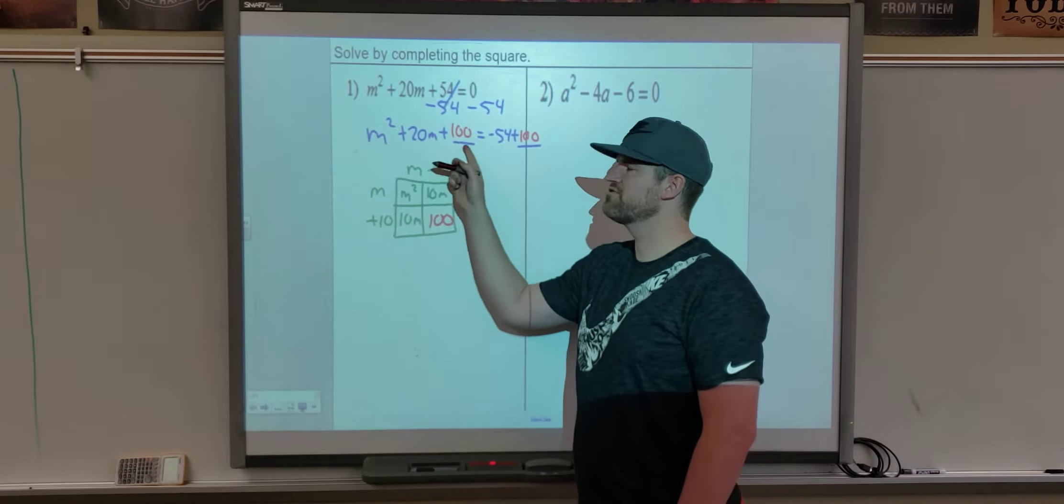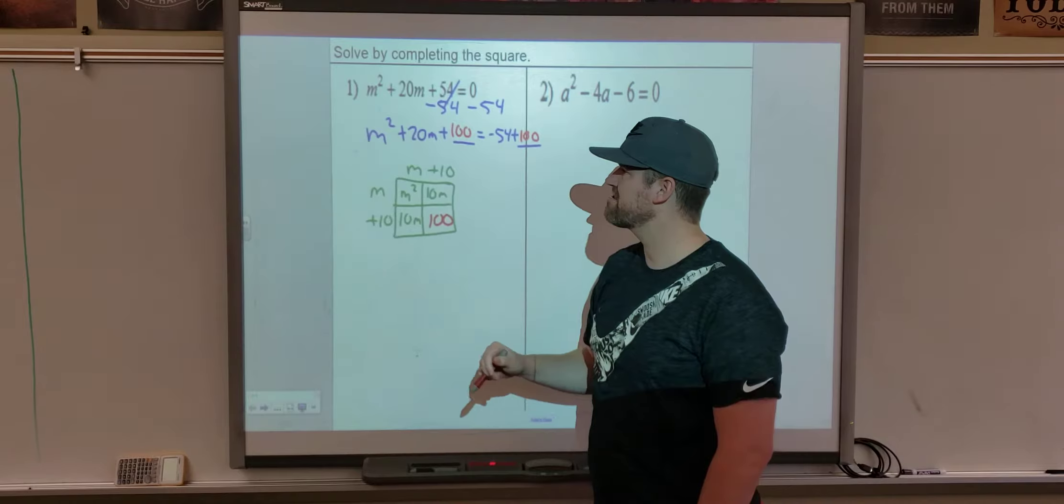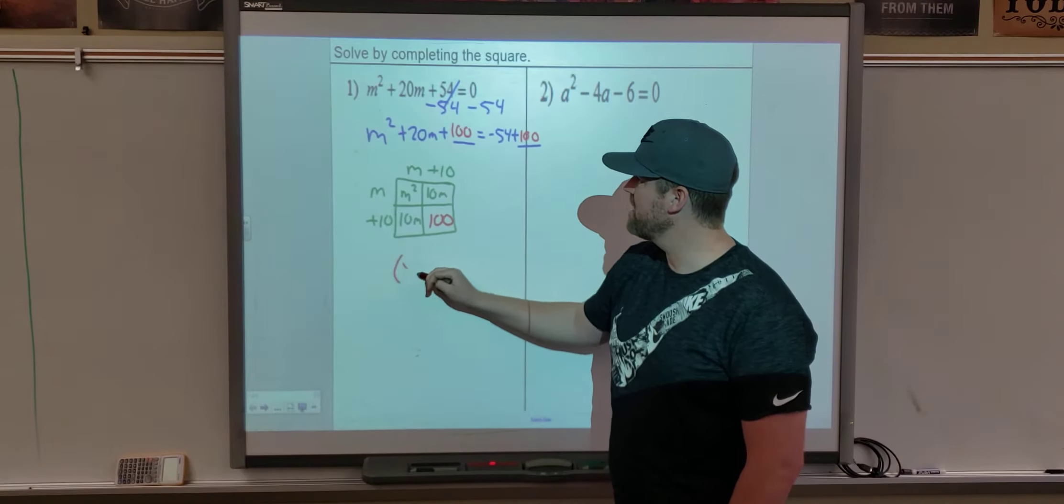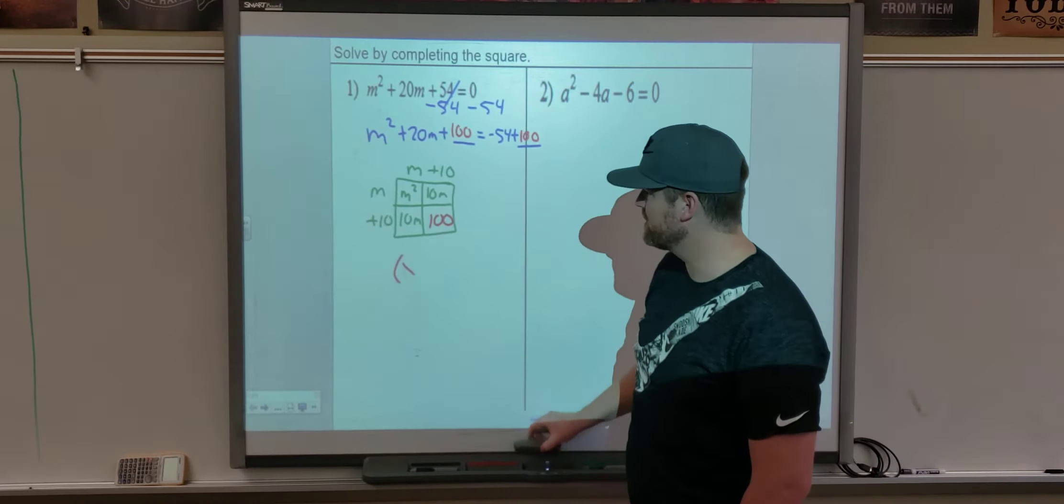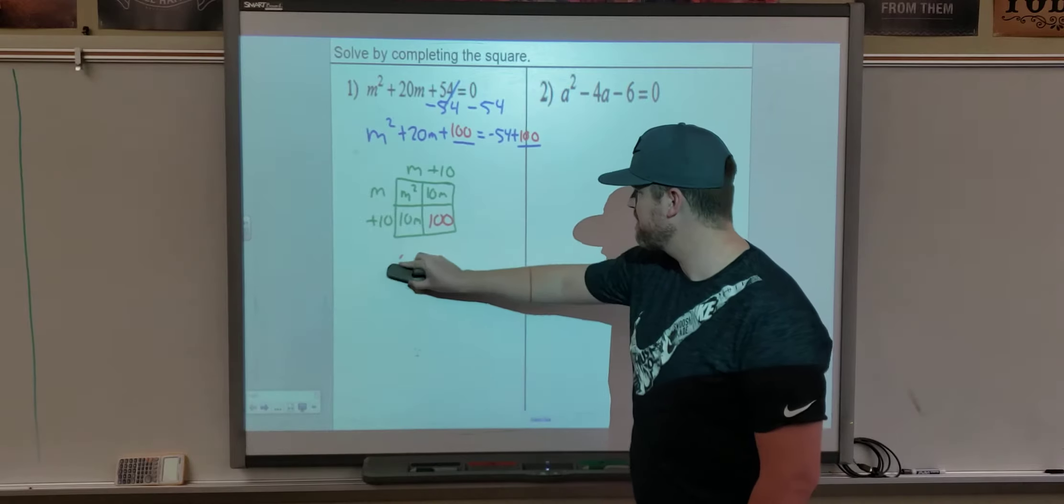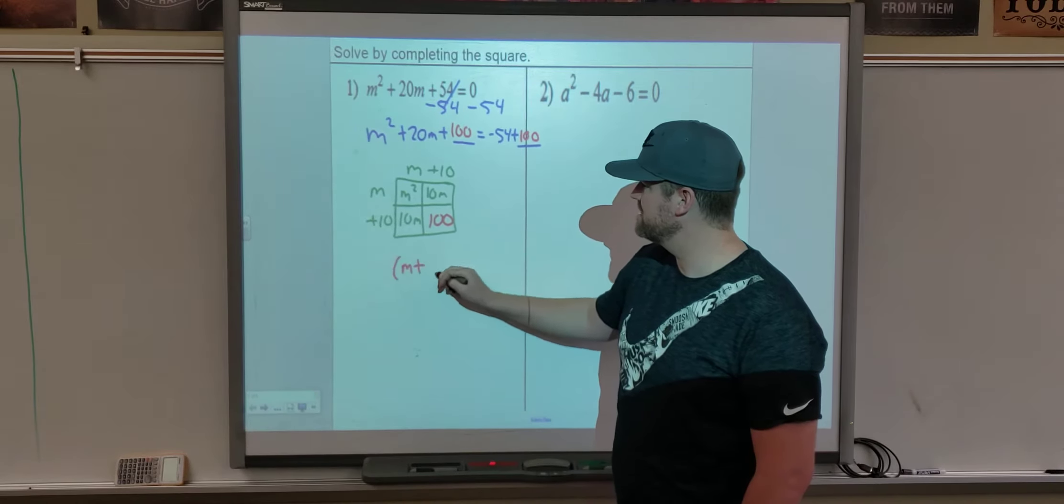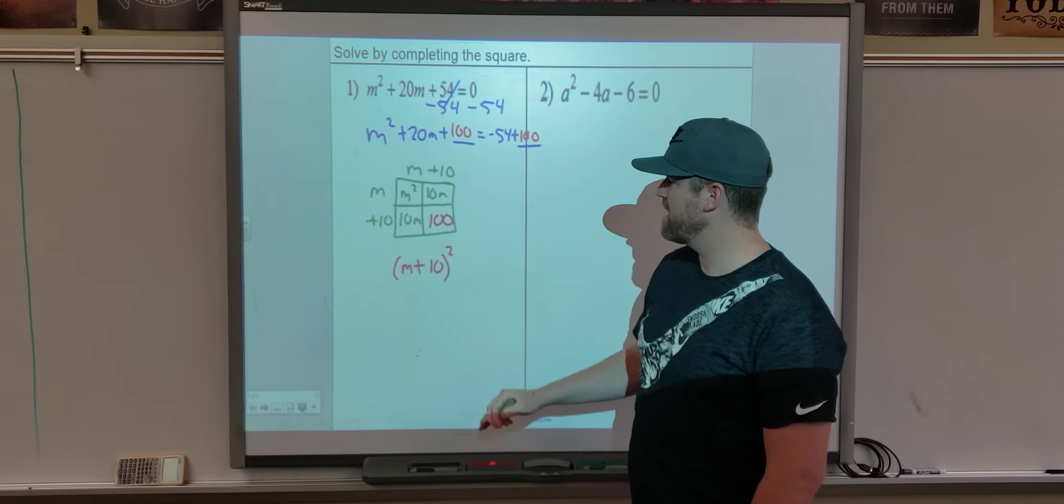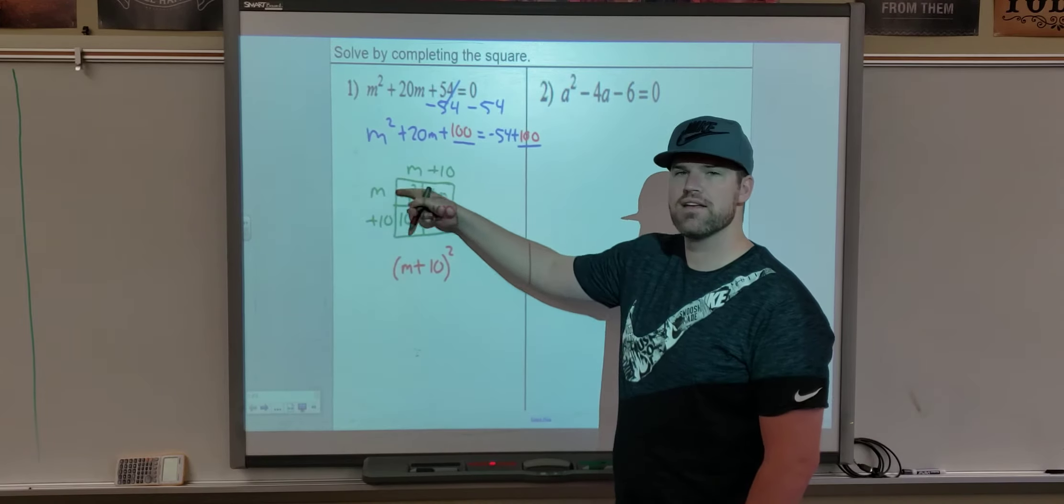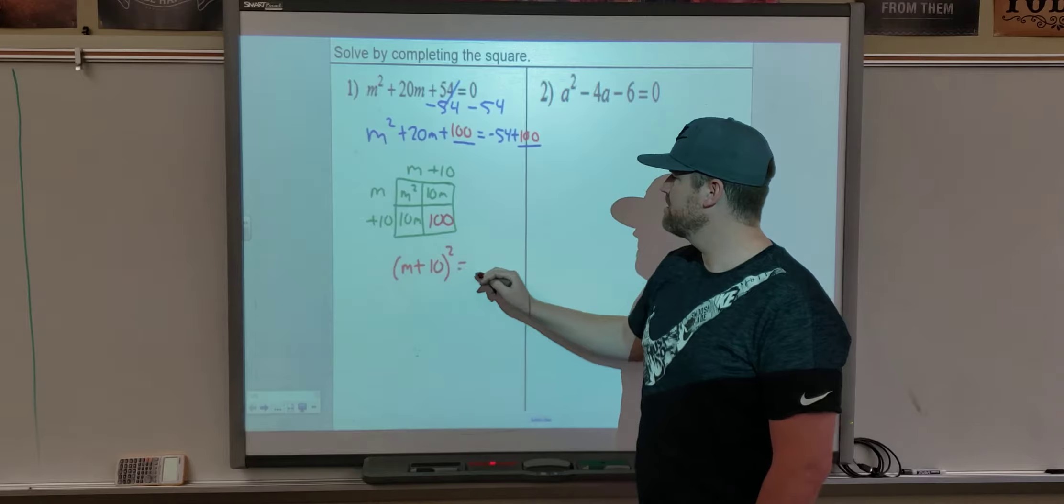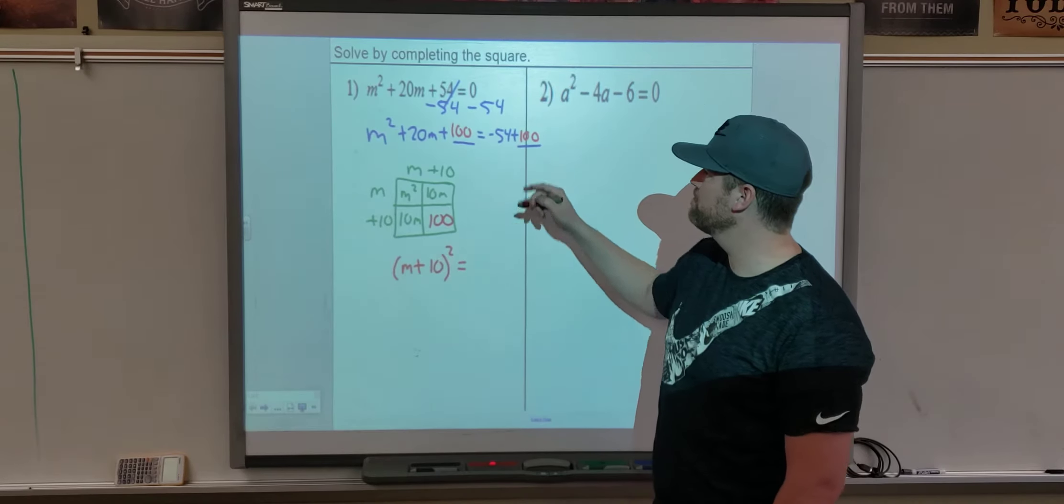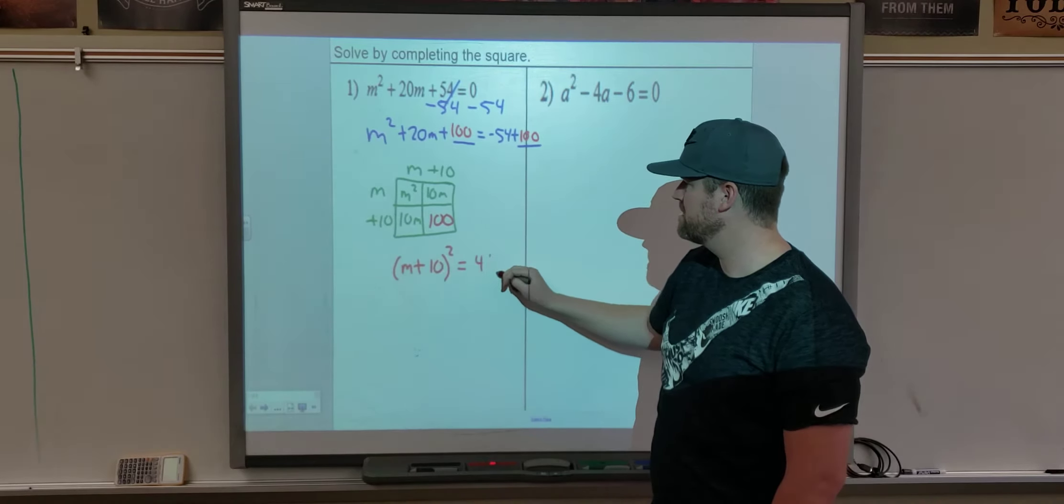We now have taken this trinomial and turned it into a perfect square. It factors now into m plus 10 squared. The other side is now negative 54 plus 100, which is 46.